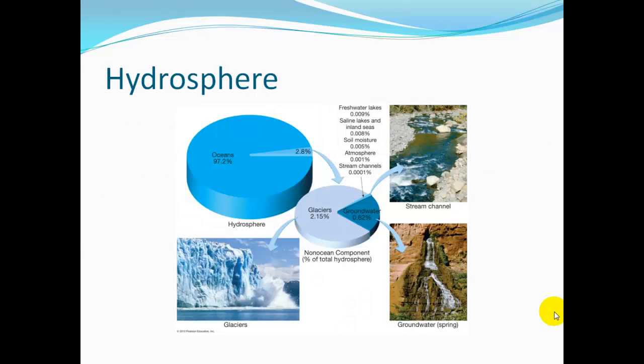The hydrosphere includes all the water on, in, and above the Earth. 97.2% of all the water is in the oceans. Only 2.8% is fresh water, and of that fresh water, 2.15% of the 2.8% is locked up in ice and glaciers. About a quarter of that is in groundwater, and a very small, tiny bit of fresh water is in our lakes, streams, and rivers.